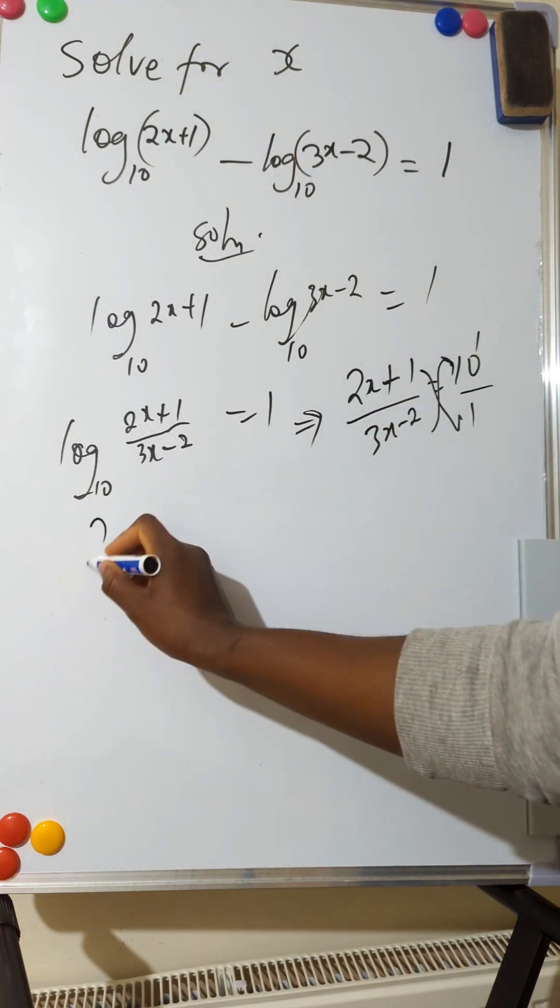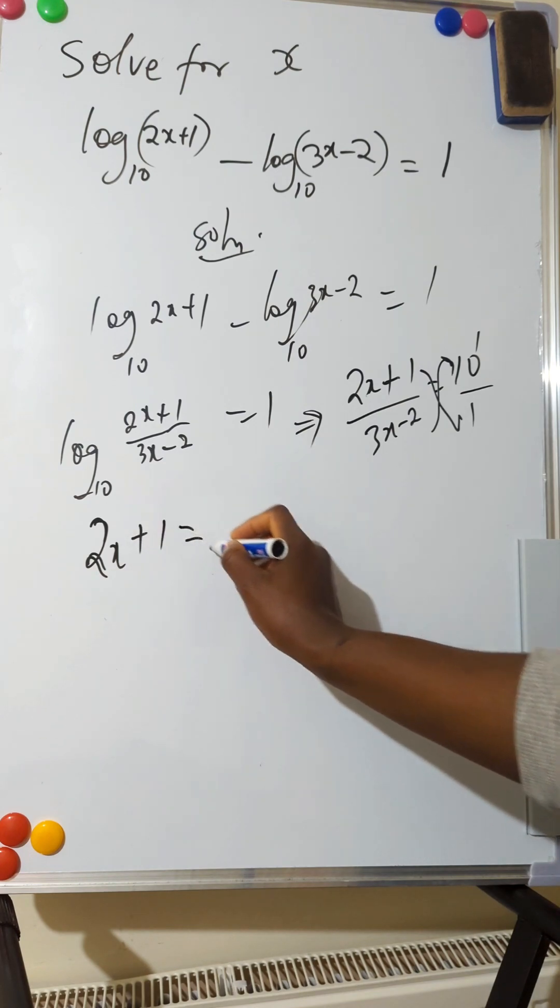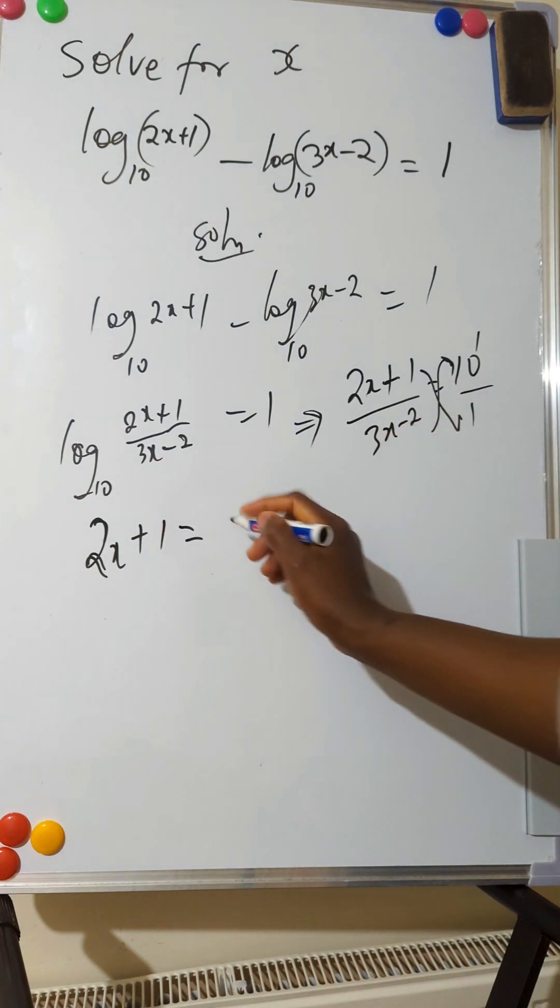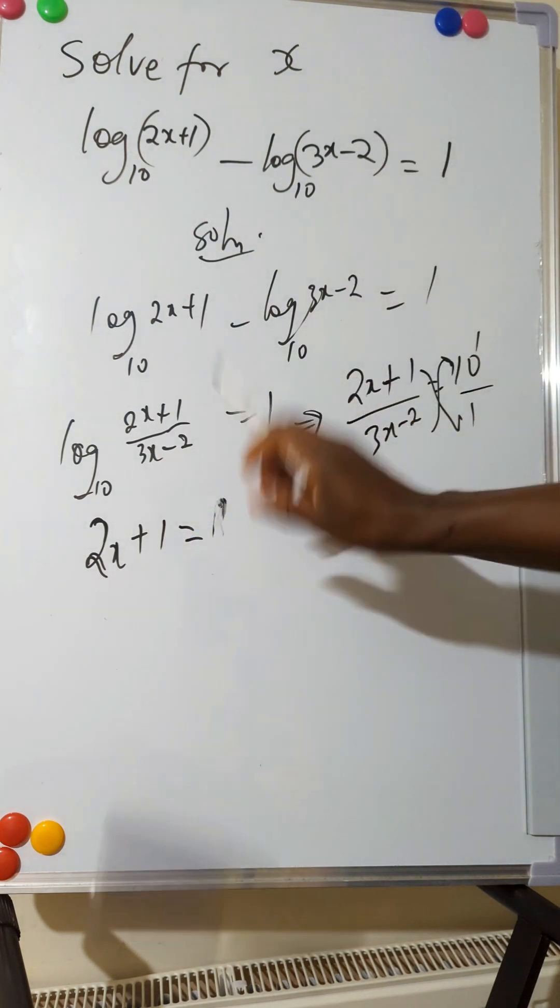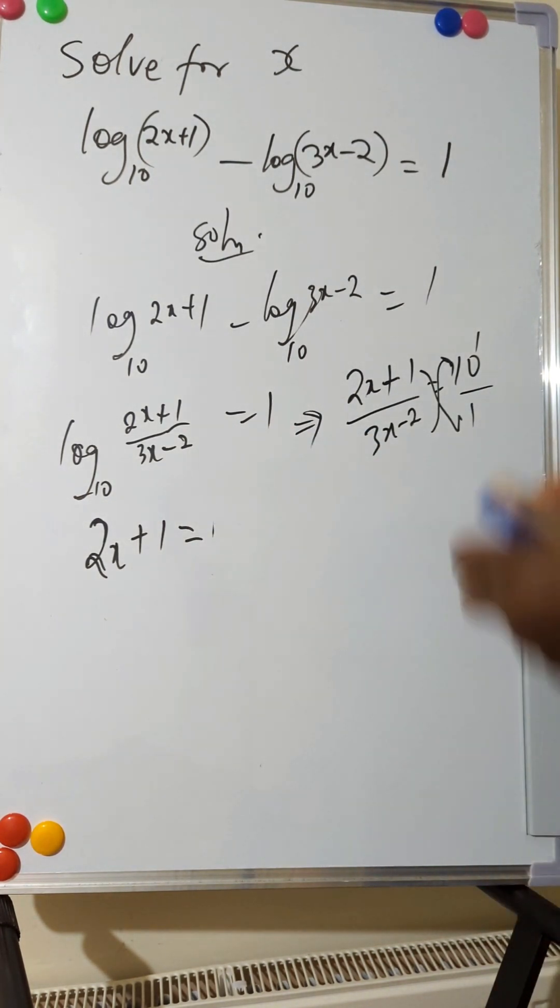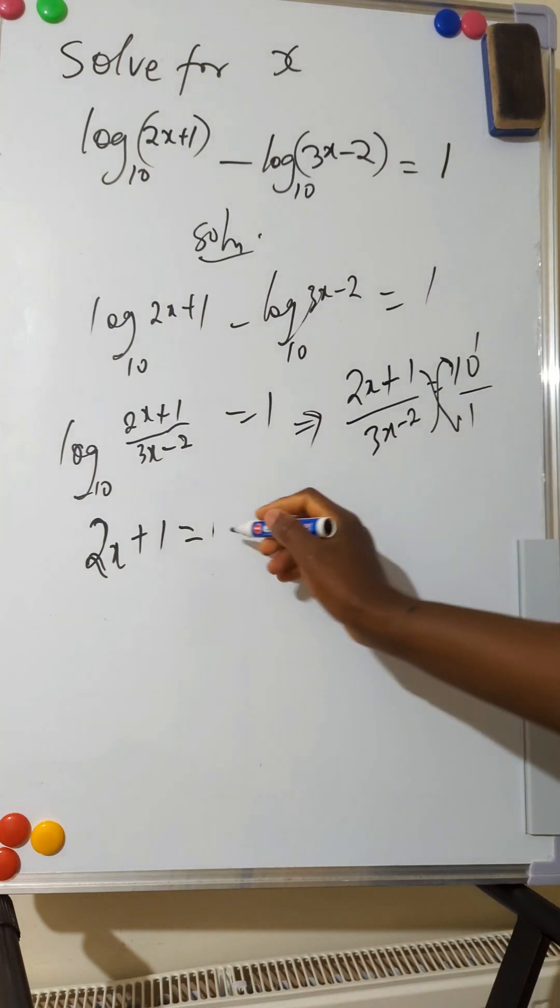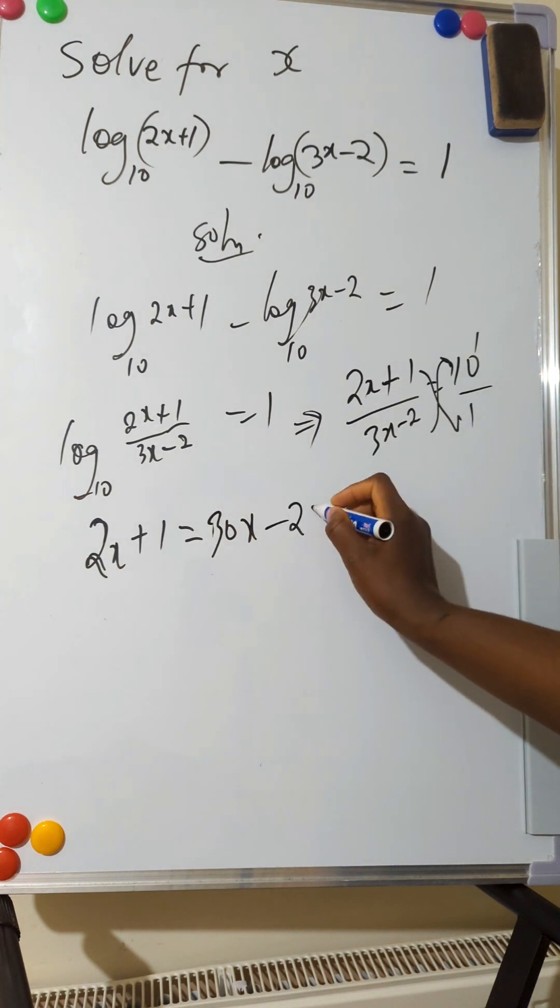So we have 2x+1 equals 10 times 3x, which is 30x. So we have 30x. 10 times minus 2 is minus 20.